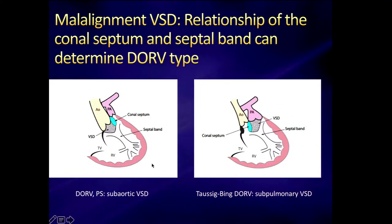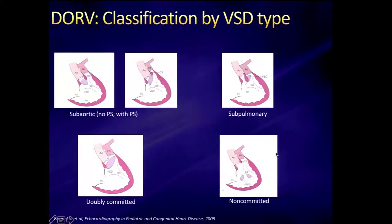It really depends on where your conal septum is. Here are the limbs of the septal band — the trabecula septomarginalis. If your conal septum is attached to the leftward, more anterior limb and malaligns that way, then you can have significant subpulmonary stenosis, such as the tetralogy form of DORV, with a subaortic VSD — the VSD closest to the aorta. On the other hand, with rightward malalignment of the conal septum attaching to the rightward limb of the septal band, you have subaortic stenosis, a subpulmonary VSD, and more of the Taussig-Bing type of DORV.